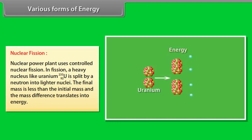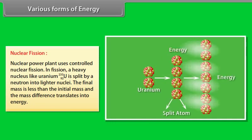Nuclear fission. Nuclear power plant uses controlled nuclear fission. In fission, a heavy nucleus like uranium 235-92 is split by a neutron into lighter nuclei. The final mass is less than the initial mass, and the mass difference translates into energy.